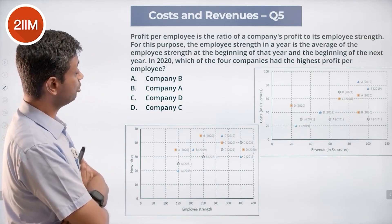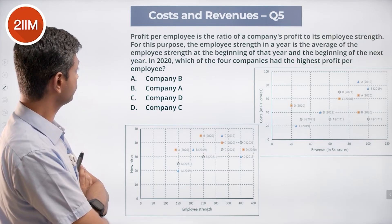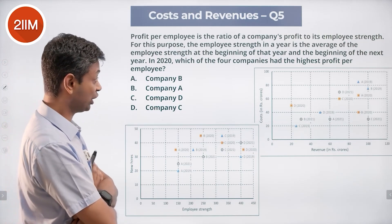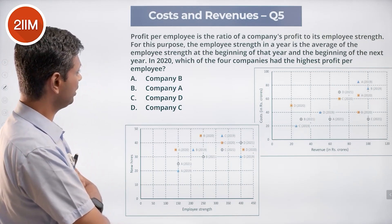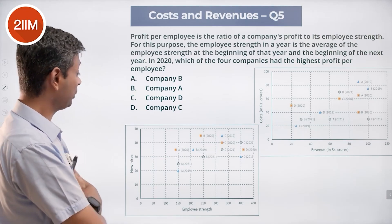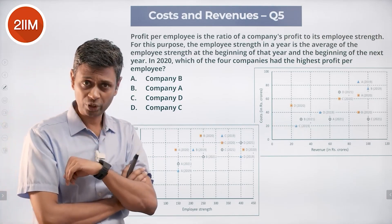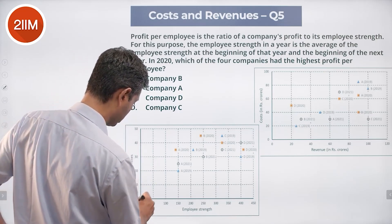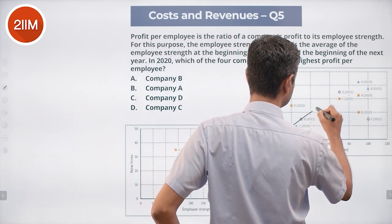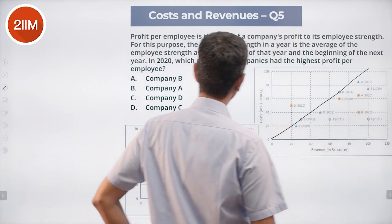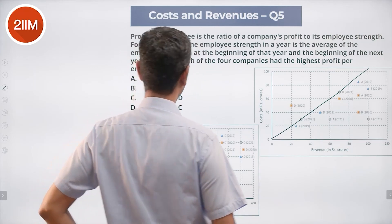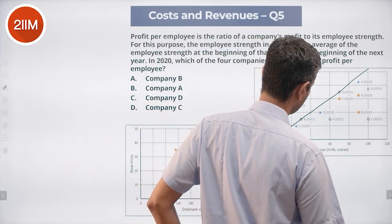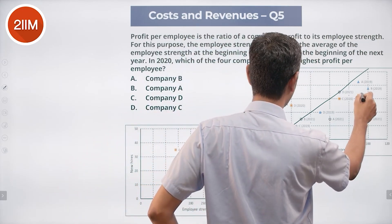Profit per employee — where employee strength is the average of strength at the beginning of the year and the end of the year (i.e., beginning of the next year). In 2020, which of the four companies had the highest profit per employee? First, look at profit numbers. D is loss-making, so forget D. A in 2020: profit is 90 minus 65 = 25 crores.